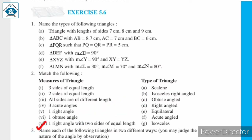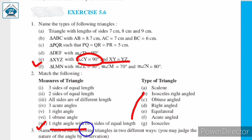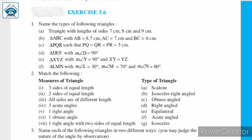Next: one right angle with two sides of equal length. Just as discussed, if there is one right angle and two sides of equal length, such a triangle is called an isosceles right angled triangle. So, the last option — number seven — matches with B: isosceles right angled triangle, which has one right angle with two sides of equal length. In this way, you have to write the solution in your notebook.